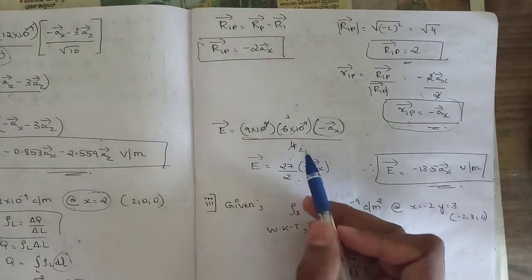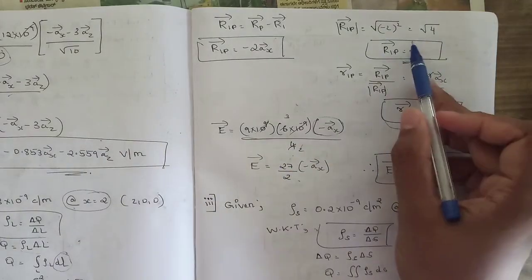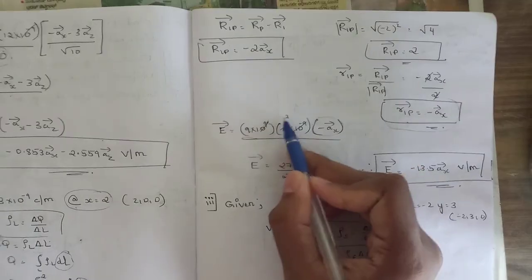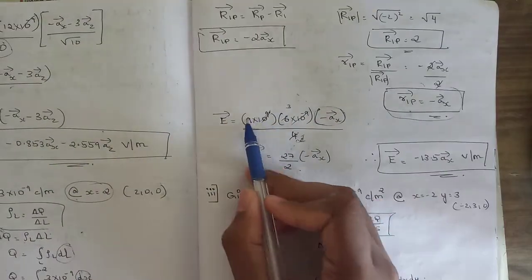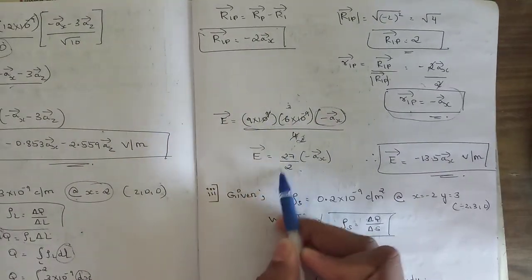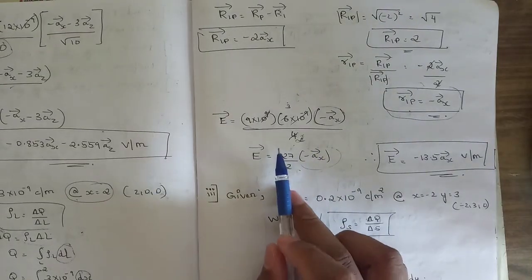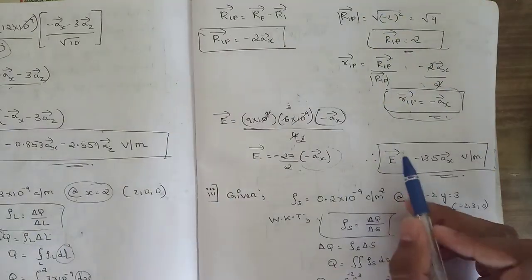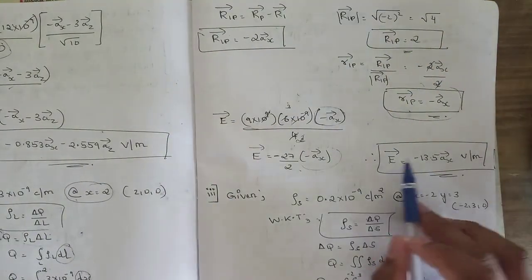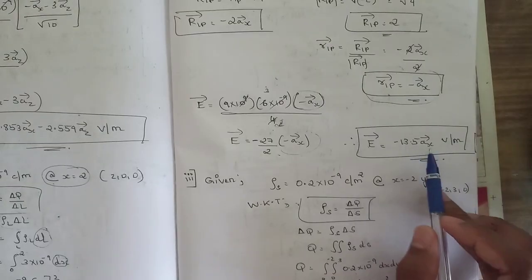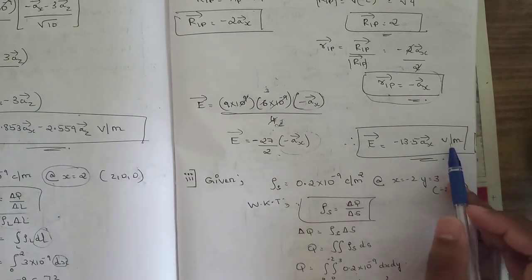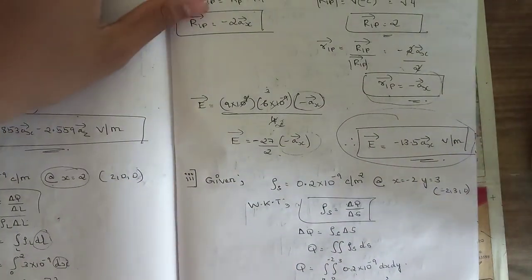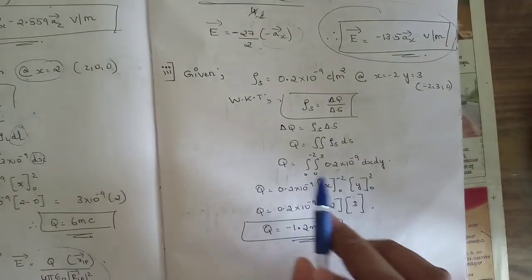Simplifying: 9 times 6 equals 54, divided by 4 gives 13.5, with the negative sign giving E equal to −13.5 ax volts per meter. This is the electric field intensity for the second sub-question.